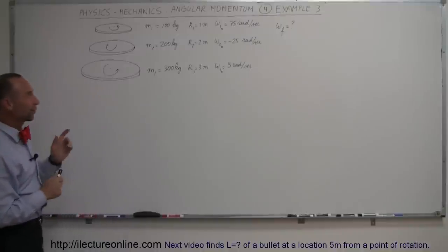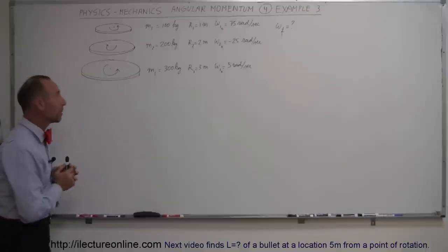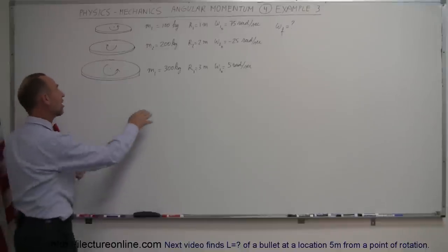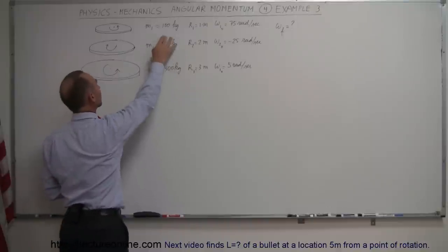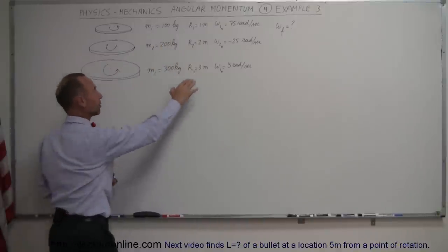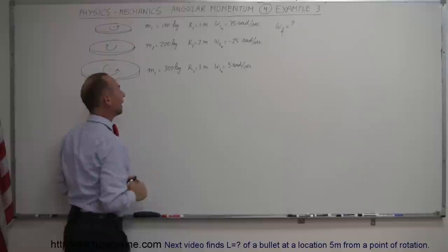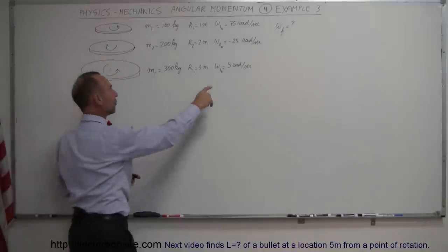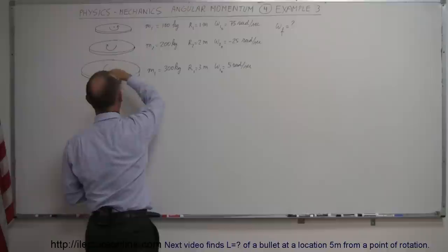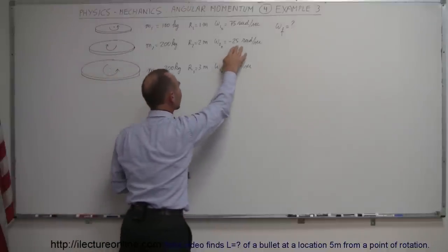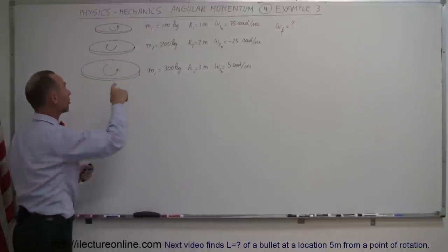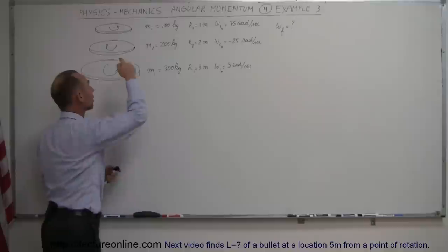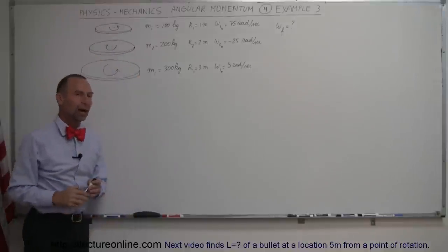Welcome to iLecture Online. Here we're going to do an interesting example in angular momentum where we have three spinning disks independently spinning. They each have their independent mass: 300, 200, and 100 kilograms. They each have their radius: 3 meters, 2 meters, and 1 meter. And they each have their initial angular velocity: 5 radians per second counterclockwise for the first disk, minus 25 radians per second (clockwise) for the second disk, and 75 radians per second counterclockwise for the small disk on top.